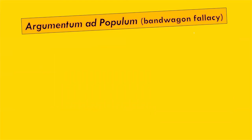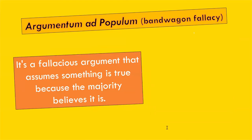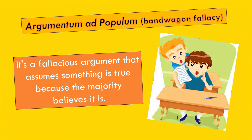Argumentum ad populum, or the bandwagon fallacy, is the last example. It's a fallacious argument that assumes something is true because the majority believes it is. For example, if the majority of your classmates are cheaters, you might be persuaded to do the same because they get good grades. However, just because everyone is doing something doesn't mean it's right or moral. As the famous dictum goes: what is right is right even if nobody is doing it; what is wrong is wrong even if everybody is doing it.